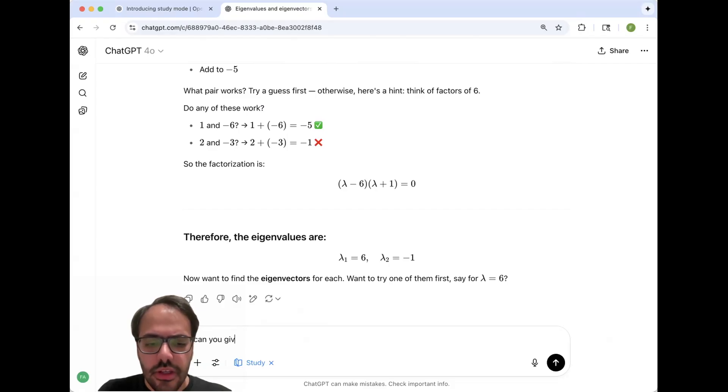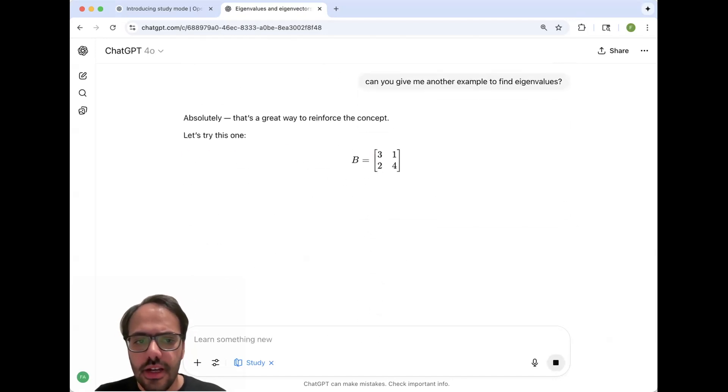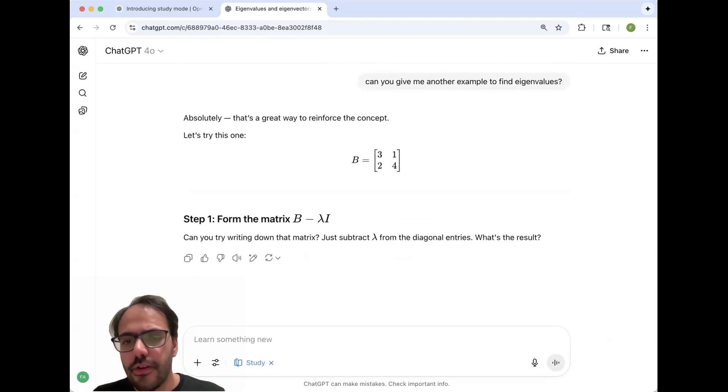can you give me another example to find eigenvalues? And let's see what this does. So now I have a different matrix. And now again, it tells me to go through this step to subtract this lambda from the main diagonals and show the result to be able to find these eigenvalues.